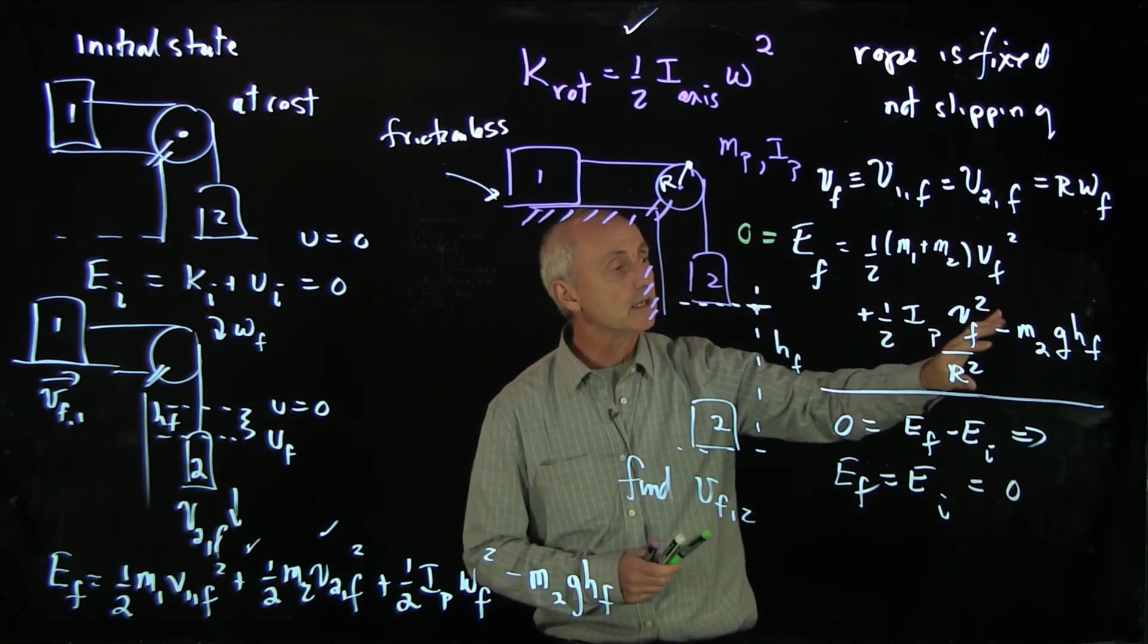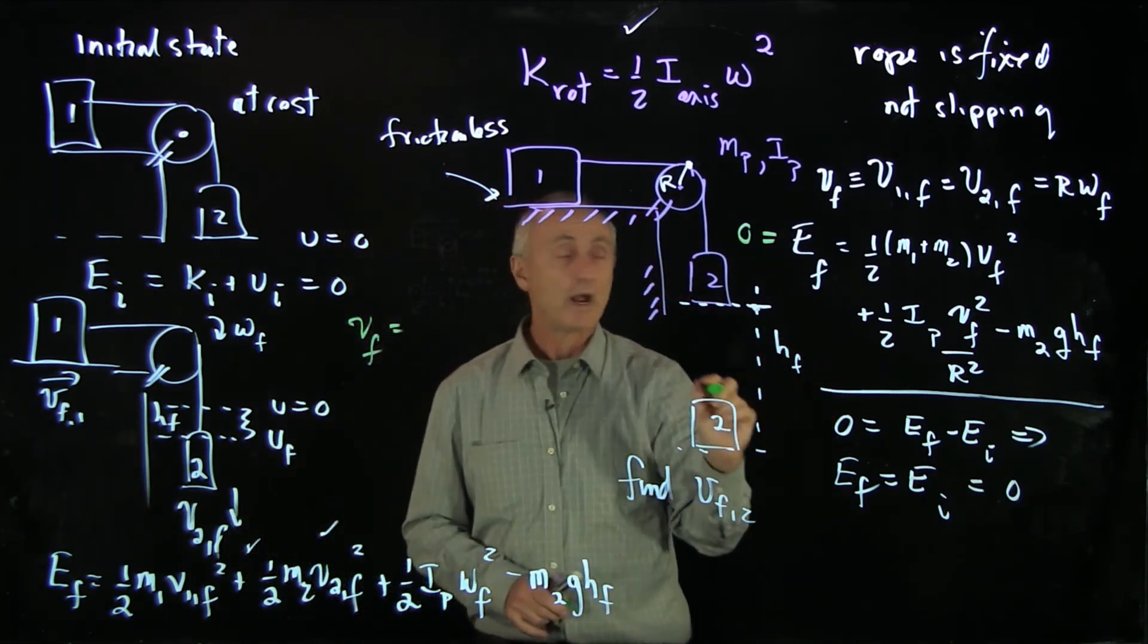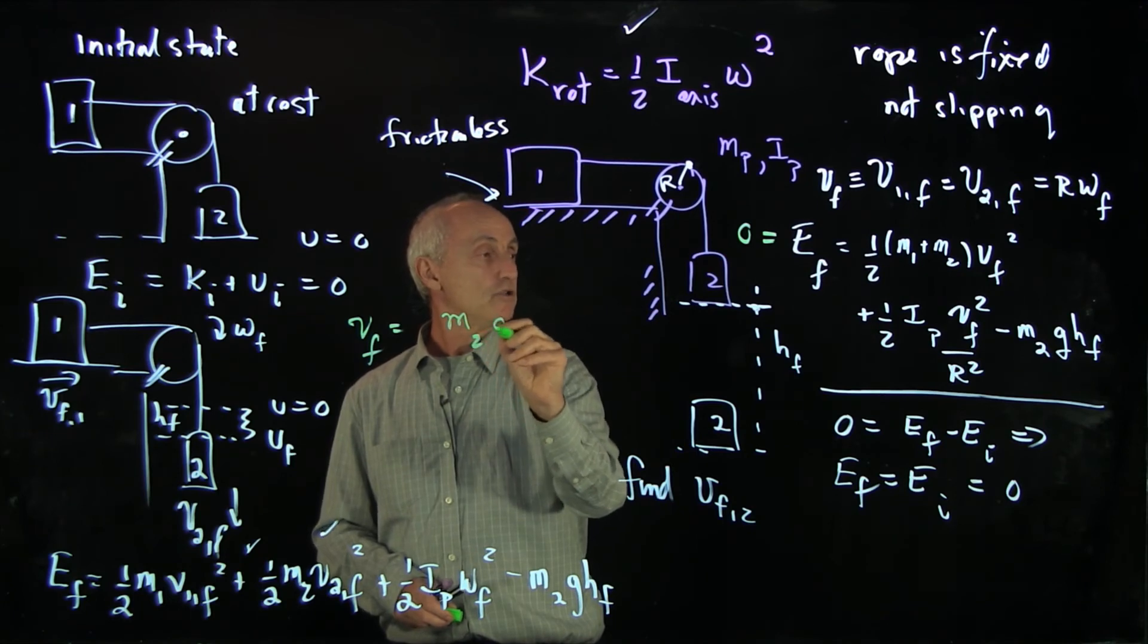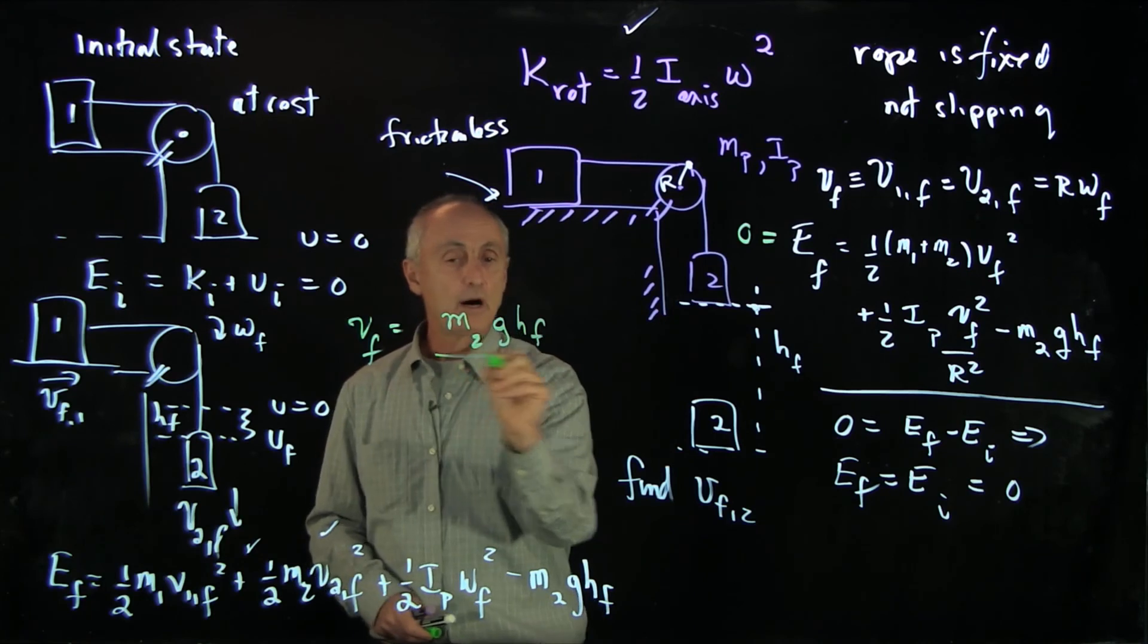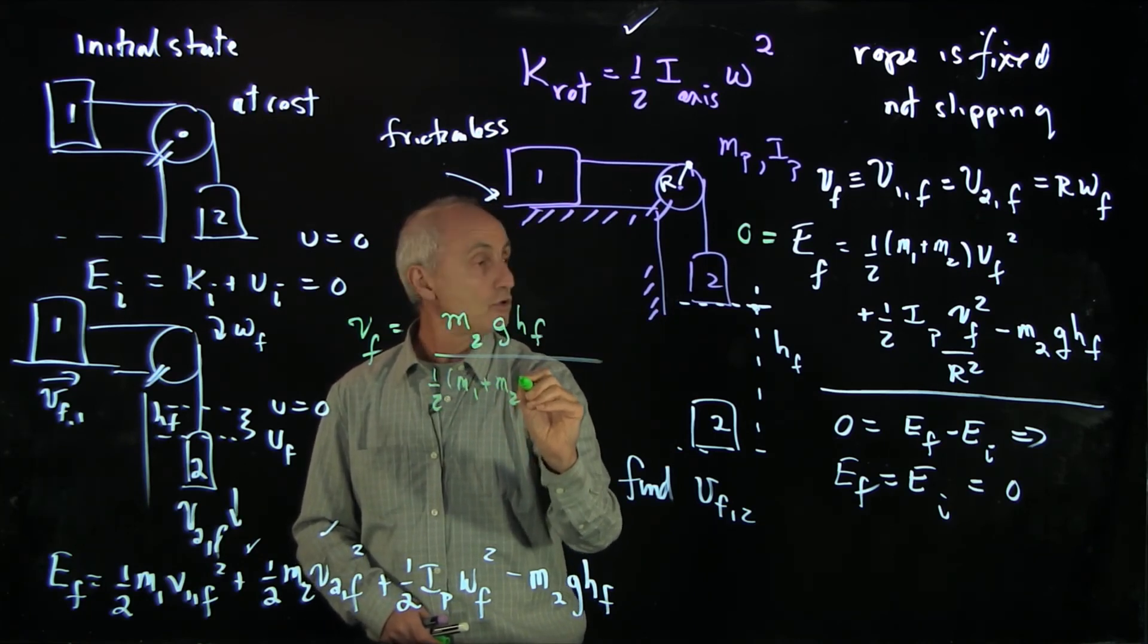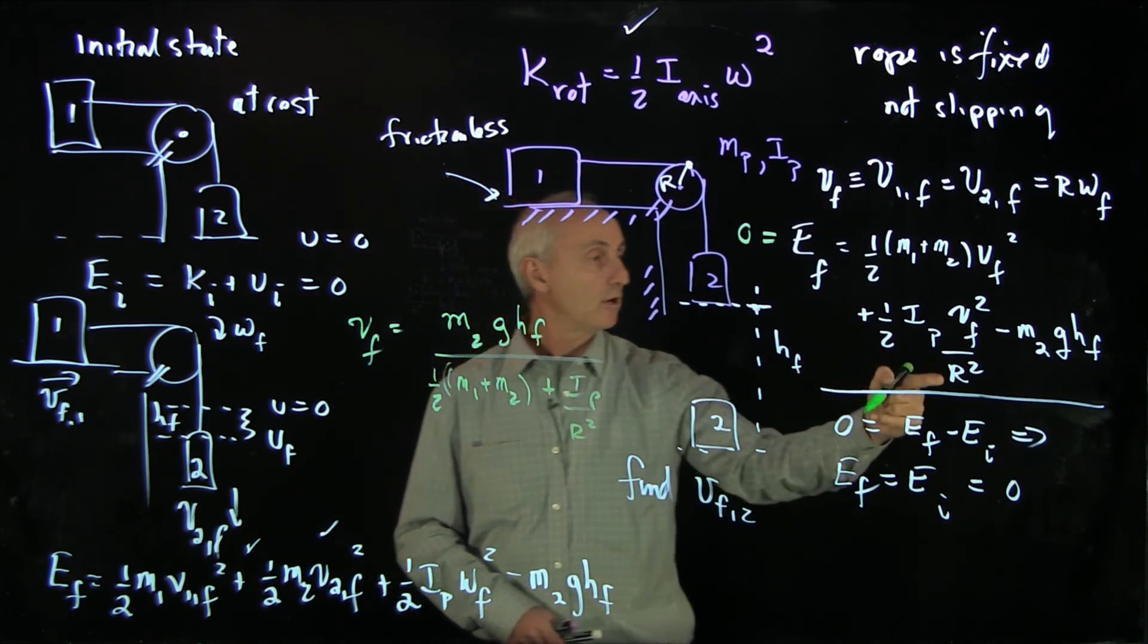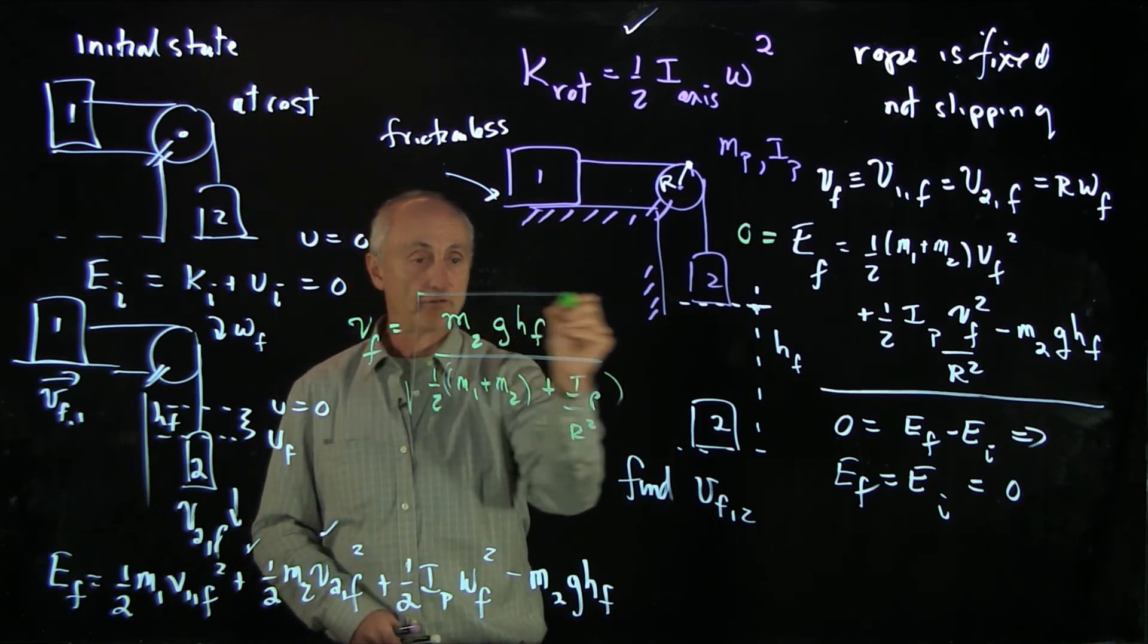I can now solve this equation by setting e final equal to 0. Then you can see algebraically, I can solve for v final. What I get is m2 gh final divided by this common coefficient, 1 half m1 plus m2 plus the moment of inertia divided by radius squared.